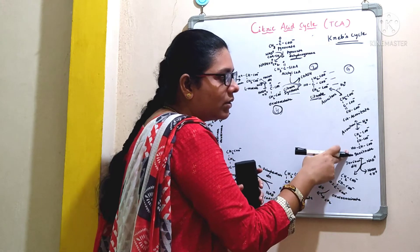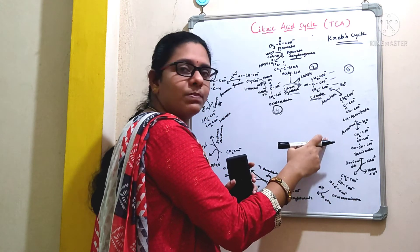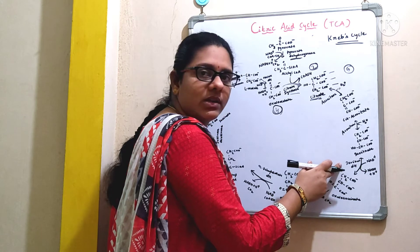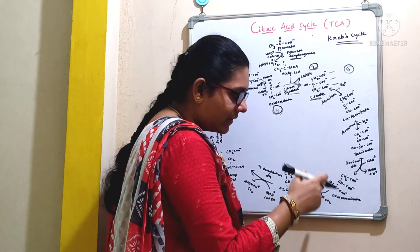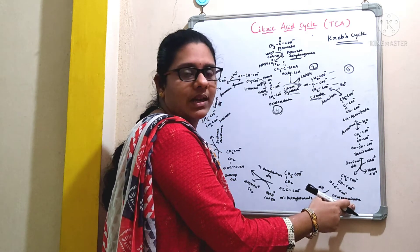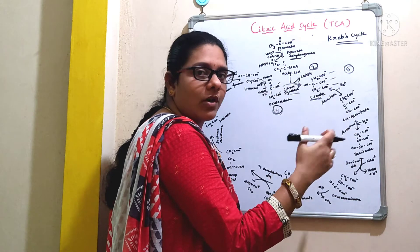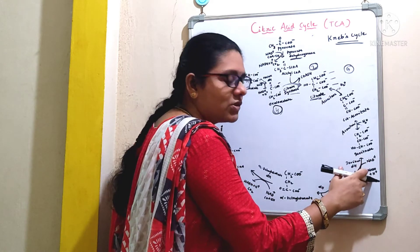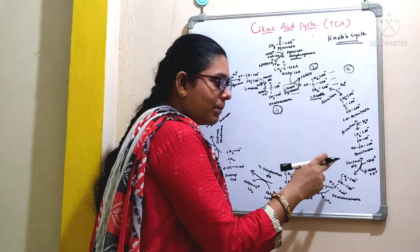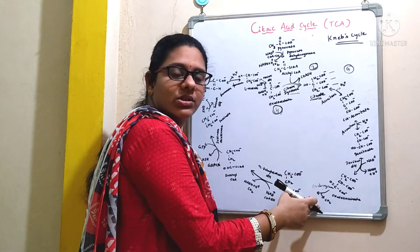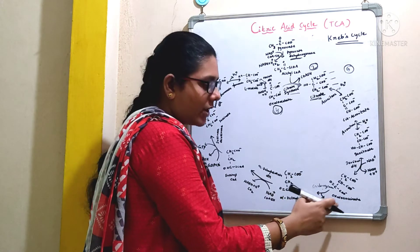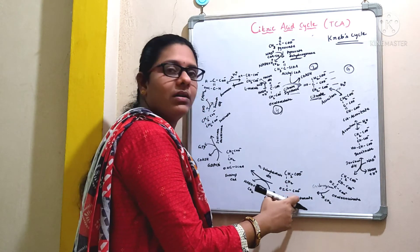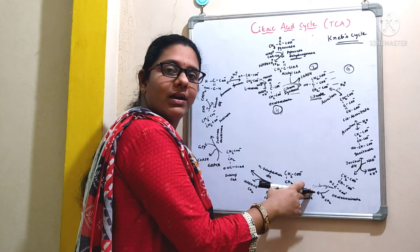This isocitrate will undergo the process of dehydrogenation by the action of an enzyme called isocitrate dehydrogenase, giving rise to a compound called oxalosuccinate. In the step of dehydrogenation, there will be a removal of hydrogen molecules — those two hydrogen molecules are accepted by NAD+, giving rise to NADH + H+. The step of dehydrogenation is followed by decarboxylation, meaning removal of carbon dioxide from this 6-carbon compound oxalosuccinate, giving rise to a 5-carbon compound called alpha-ketoglutarate. This reaction is catalyzed by an enzyme called carboxylase.